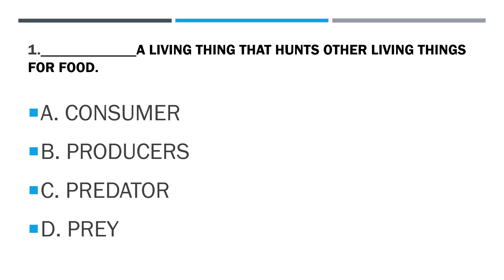Number 1. Blank: a living thing that hunts other living things for food. A. Consumer. B. Producers. C. Predator. D. Prey.